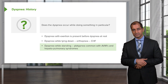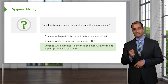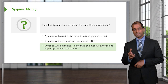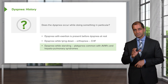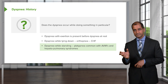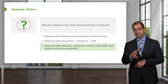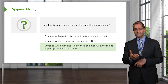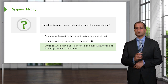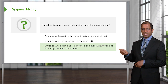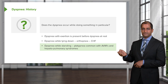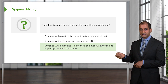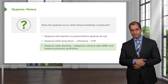Dyspnea while standing — that's platypnea, common with AV malformations or hepatopulmonary syndromes. With AV malformations, blood moves from arteries directly into veins without passing through capillaries. That's an arteriovenous malformation — AVM. The patient has dyspnea even while standing because they cannot properly perform gas exchange. Look at the abbreviation: A-V-M — arteriovenous malformation. What's missing? The capillaries. You must have capillaries for proper gas exchange.